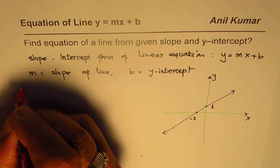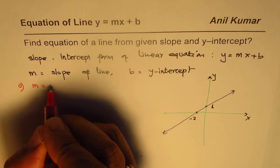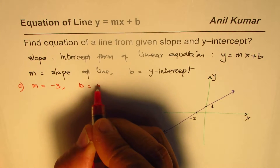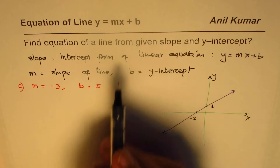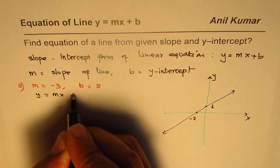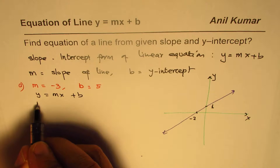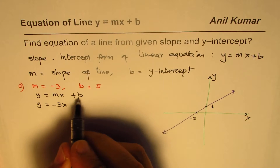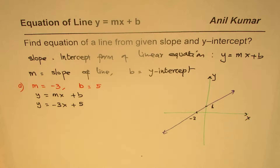Let's do a few practice questions. Part a: we are given slope m = -3 and y-intercept b = 5. Using y = mx + b, we substitute m as -3 and b as 5, giving us the equation y = -3x + 5.